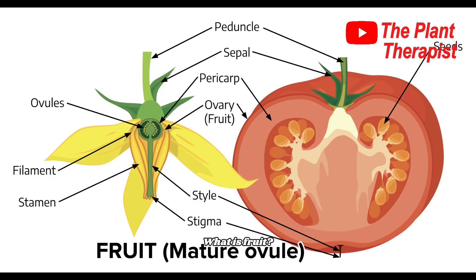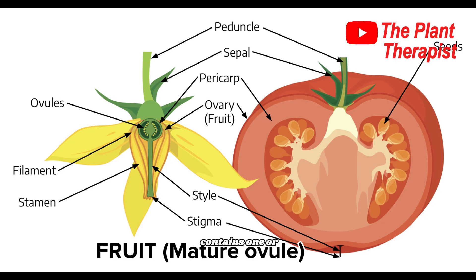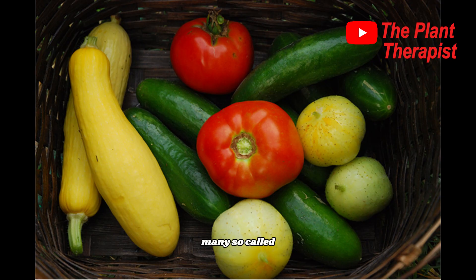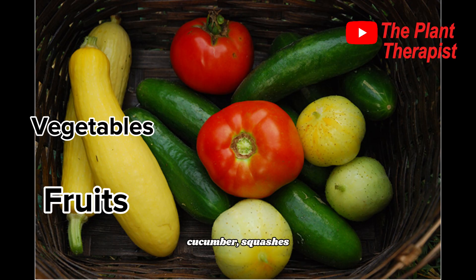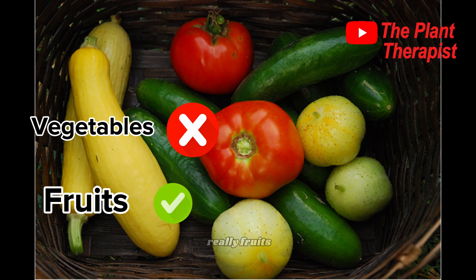What is fruit? A fruit is a mature ovary — it is any ovary and its accessory parts that has developed and matured. A fruit usually contains one or more seeds that develop from fertilized ovules within the ovary. By this definition, many so-called vegetables including string beans, cucumber, squashes, and tomatoes are really fruits.